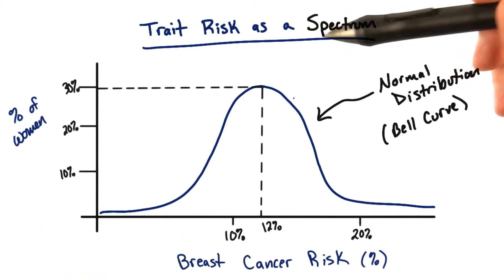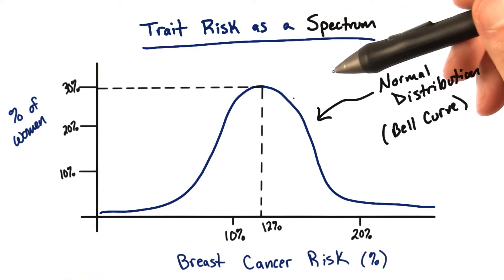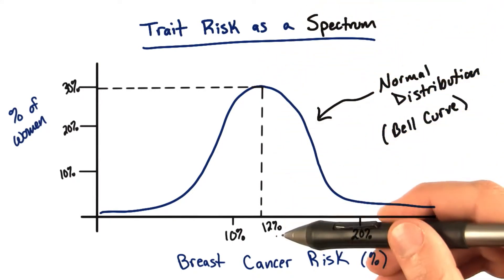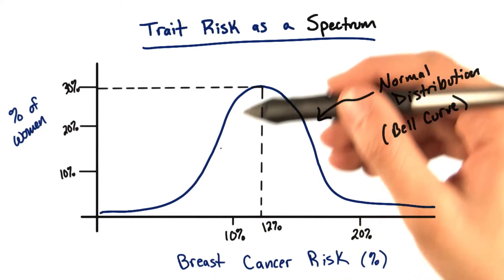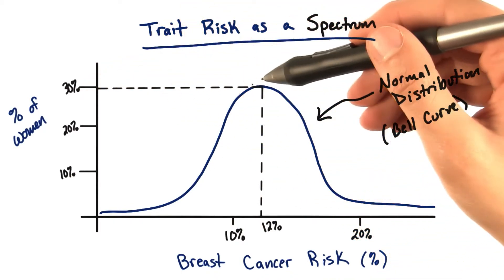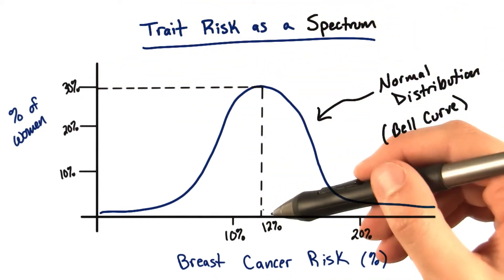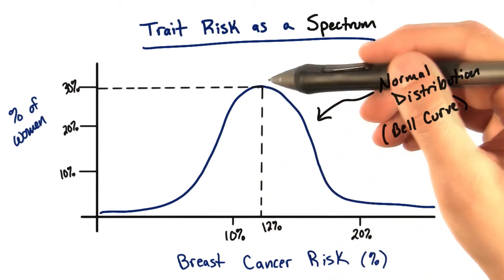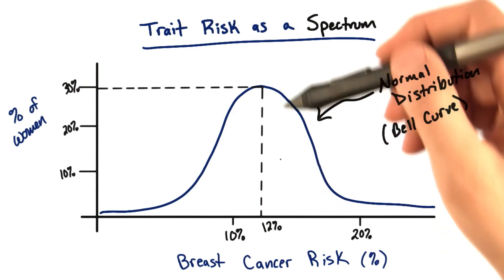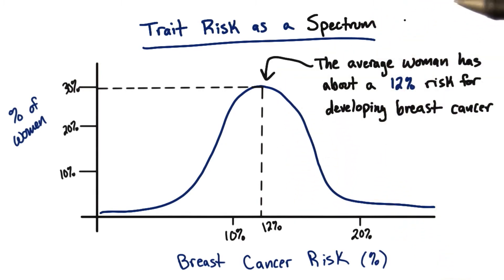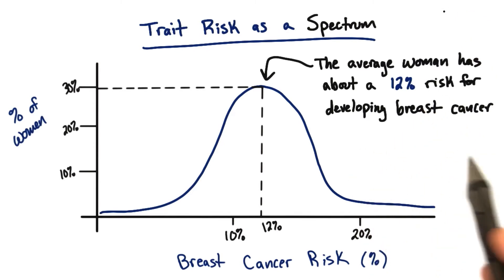For example, in this particular normal distribution, the most number of women have a breast cancer risk of about 12%. You can see the height of the bell curve is here — about 30% of women have a 12% risk of breast cancer. This number, right in the middle — the average — means that 12% of women develop breast cancer during their lifetime. Another way to say this is that the average woman has about a 12% risk for developing breast cancer.